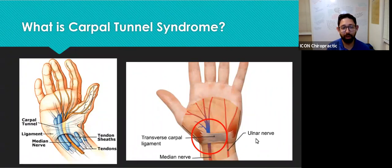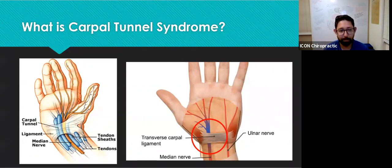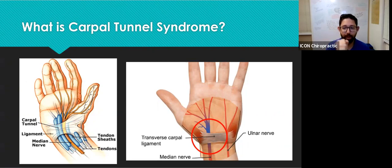Carpal tunnel syndrome occurs when the median nerve, which runs from your forearm into your palm, becomes pressed or squeezed at the wrist. The carpal tunnel is a narrow, rigid passageway containing ligaments and bones at the base of the hand. It ultimately houses this median nerve and the tendons that help bend your fingers. The median nerve provides feeling for your thumb, index finger, middle finger, and part of your ring finger. It also controls some intricate muscles at the base of your thumb.